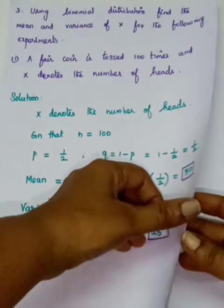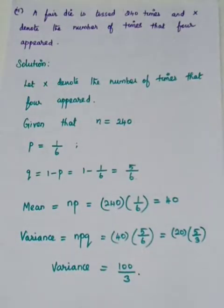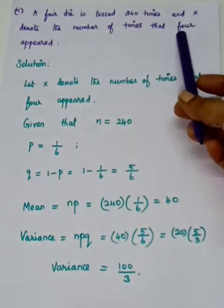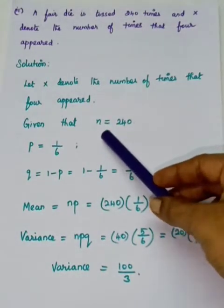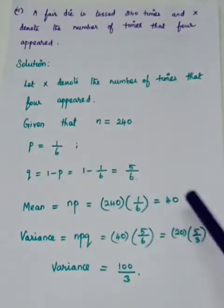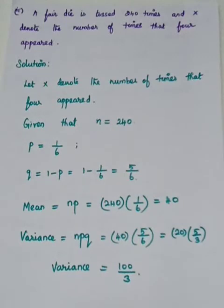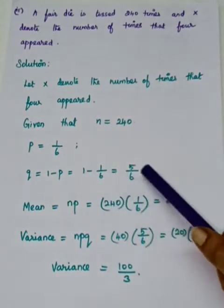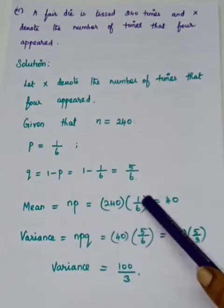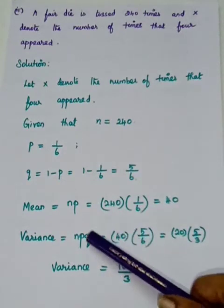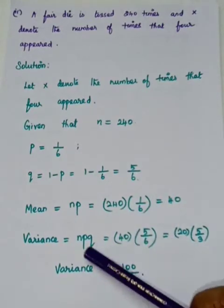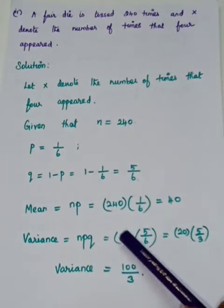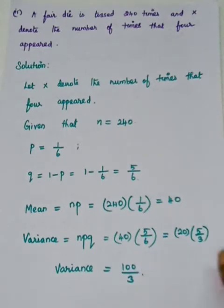Second subdivision: a fair die is tossed 240 times, and X denotes the number of times that 4 appeared. N = 240. The probability of getting the number 4 in each trial is P = 1/6. Q = 1 − 1/6 = 5/6. Mean = NP = 240 × 1/6 = 40. Variance = NPQ = 40 × 5/6. Cancelling 2 from 40 and 6 gives 20/3 × 5 = 100/3.